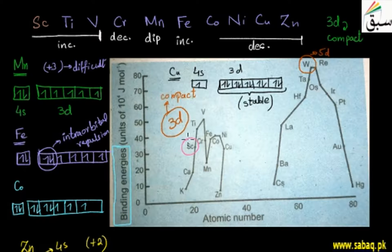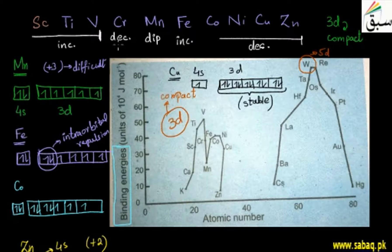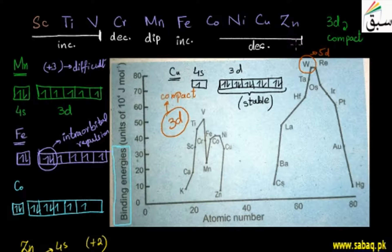We start from scandium. Titanium and vanadium show an increase. Then chromium shows a dip, manganese also dips, and finally iron increases again. There is some further increase in cobalt. Then we have a decrease toward zinc, where metallic binding decreases.